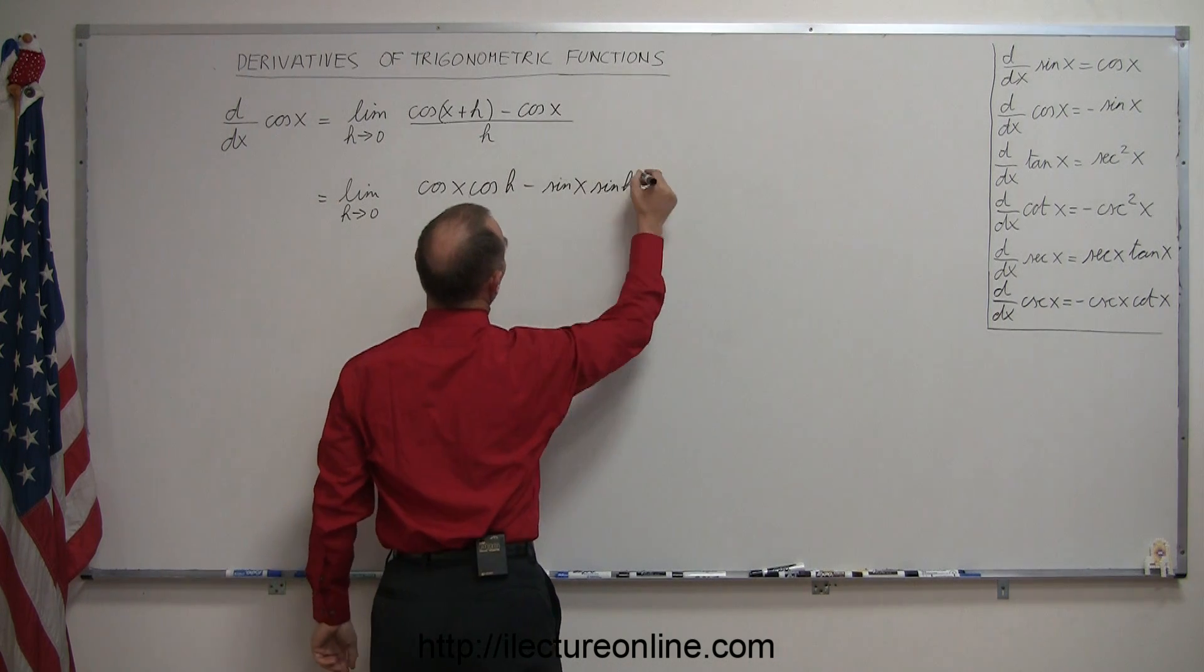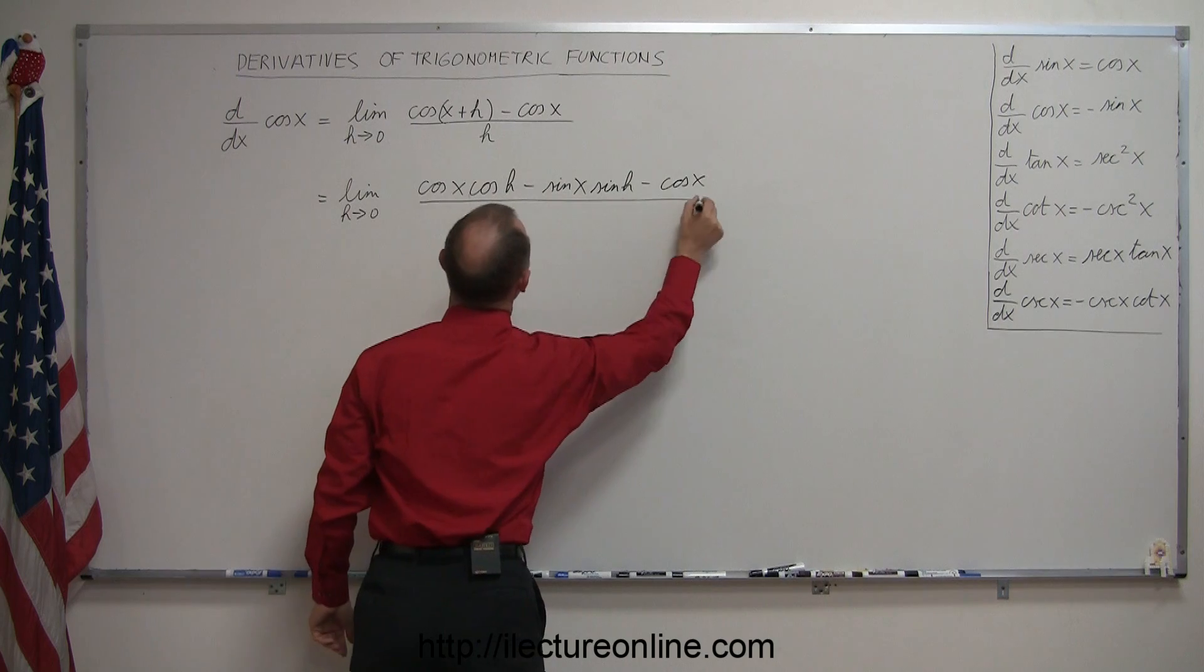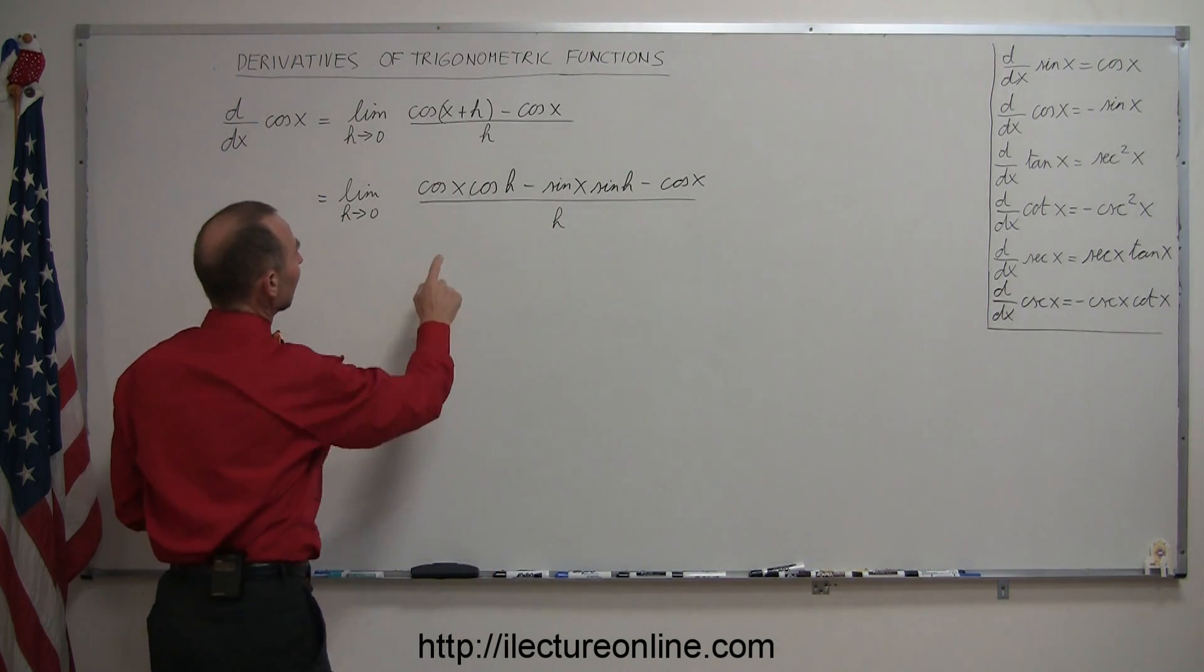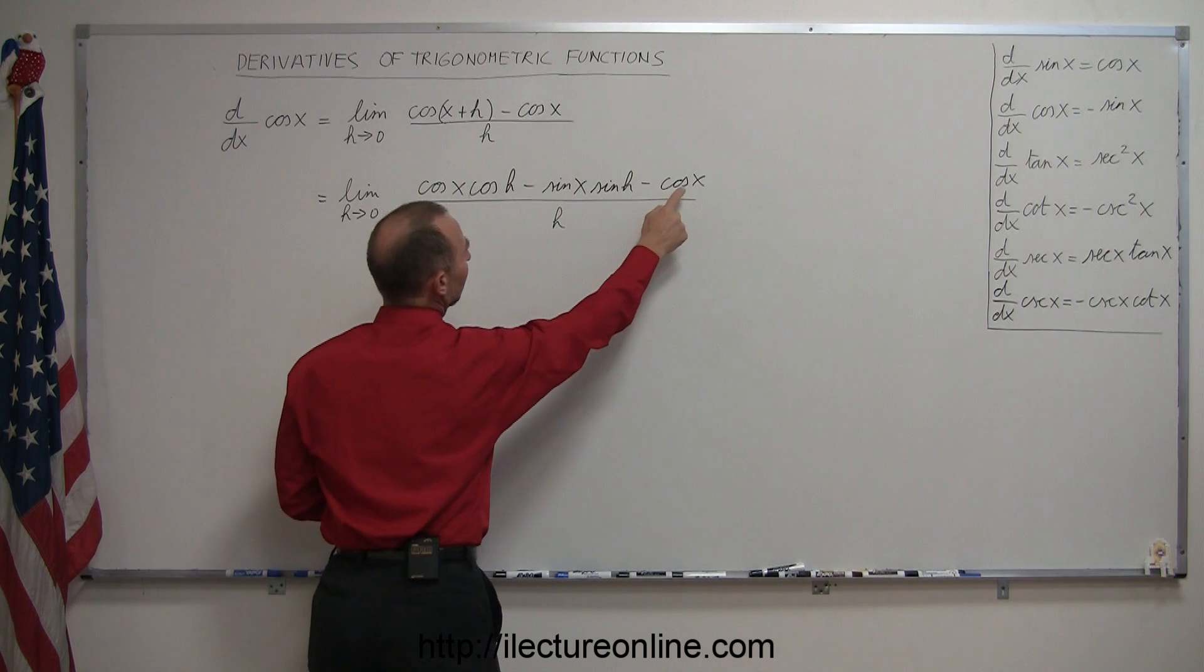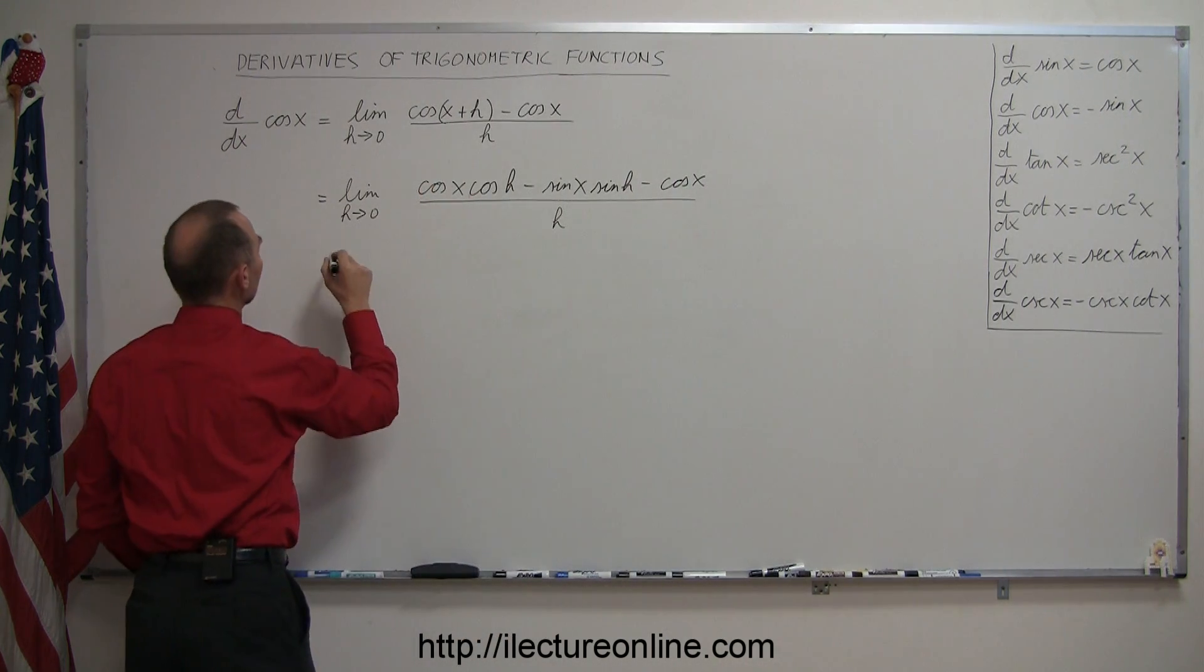We have to then subtract minus the cosine of x and divide the whole thing by h. Now, the trick here is to realize that you have a cosine of x here and you have a cosine of x there, so we can factor out a cosine of x out of those two terms.